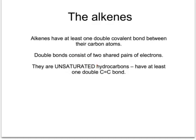When you're looking at compounds of alkanes and alkenes, you can tell the difference. Alkanes have only got single bonds, whereas alkenes have got at least one double bond, making them unsaturated.